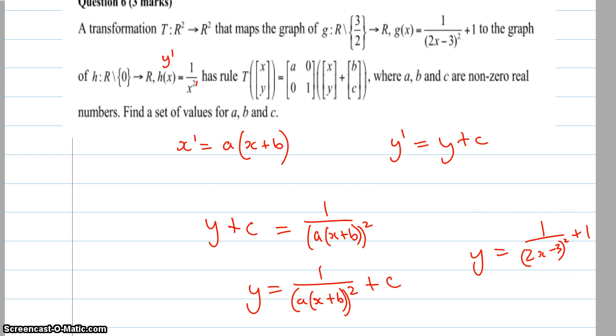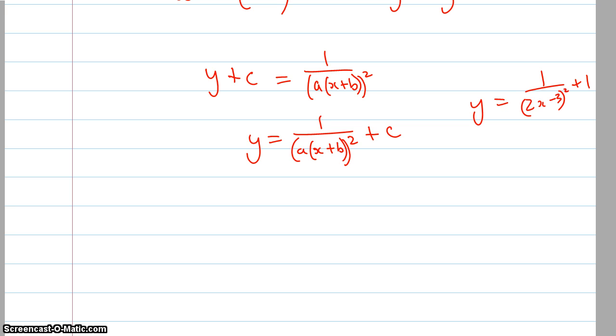That this one, one over two x minus three squared plus one, needs to be the same as that, so I can work out what a, b, and c are. So I can see very clearly that c equals one. This one, I'll just do one more change to that, that becomes one over two x minus three over two, and all of that is still squared plus one. I can tell you now that a equals two and that b equals negative three over two.